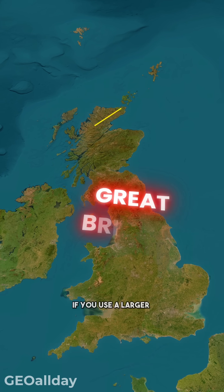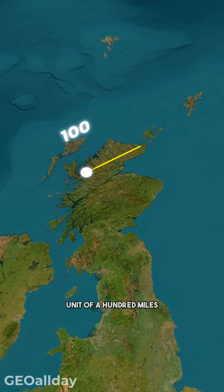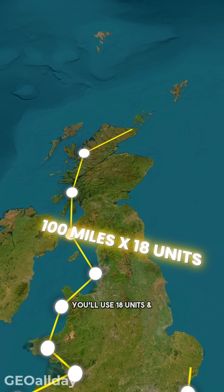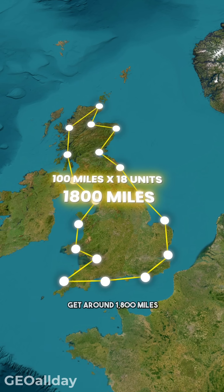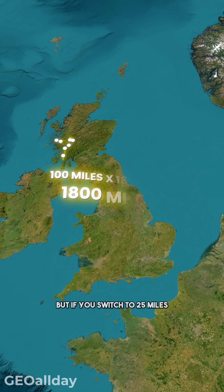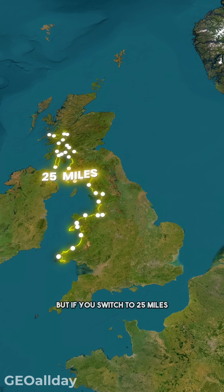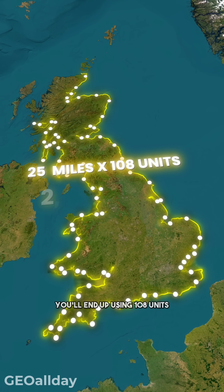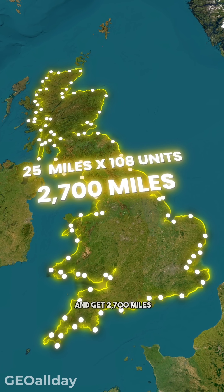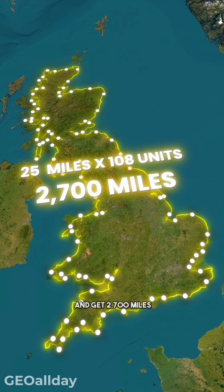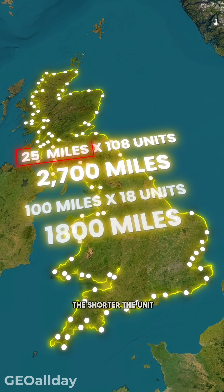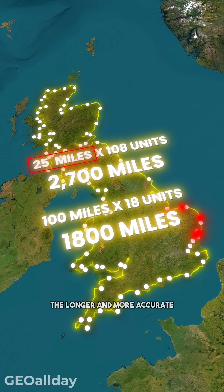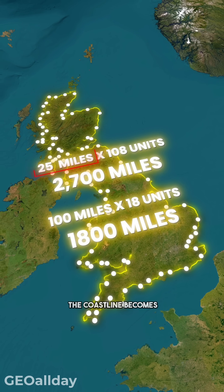If you use a larger unit of 100 miles, you'll use 18 units and get around 1,800 miles. But if you switch to 25 miles, you'll end up using 108 units and get 2,700 miles. The shorter the unit, the longer and more accurate the coastline becomes.